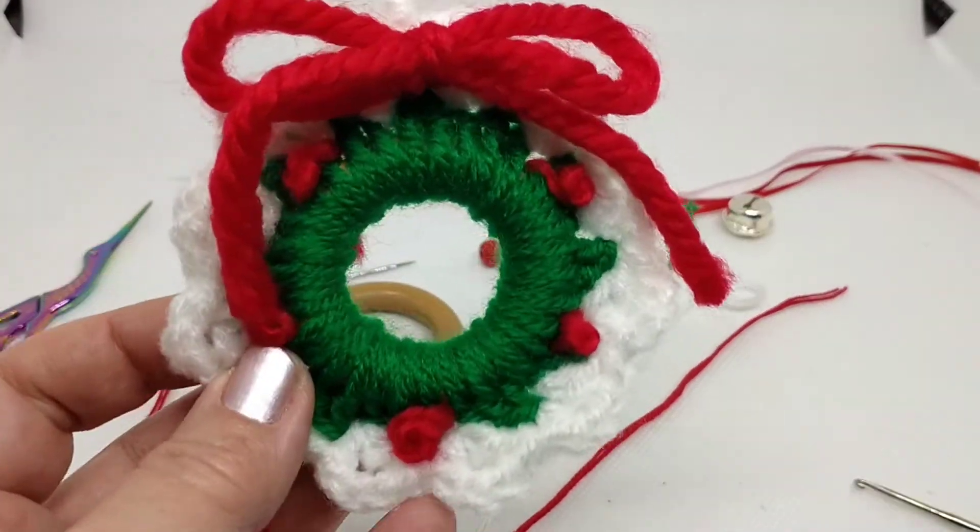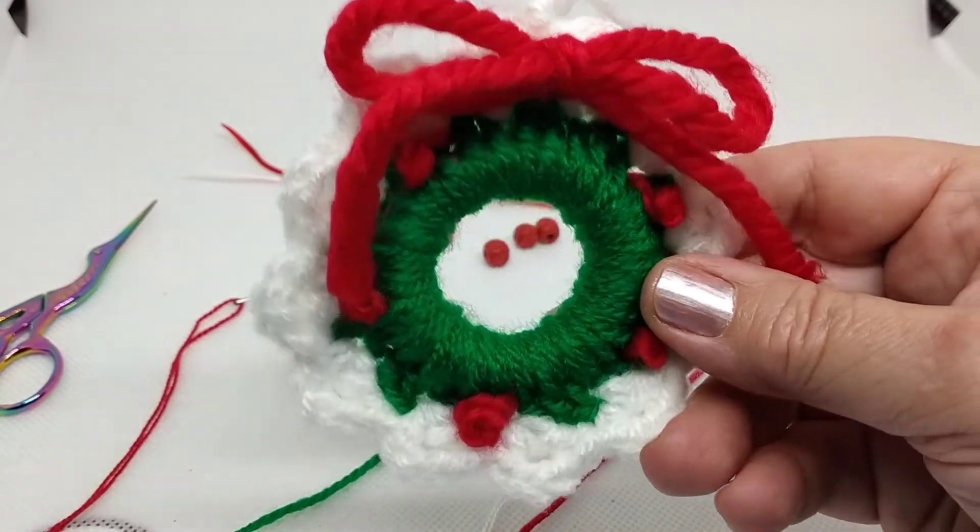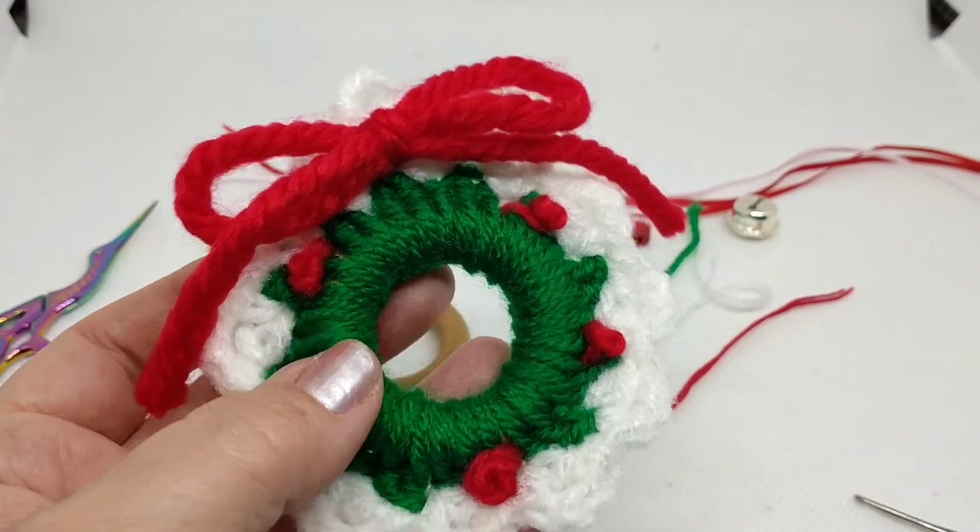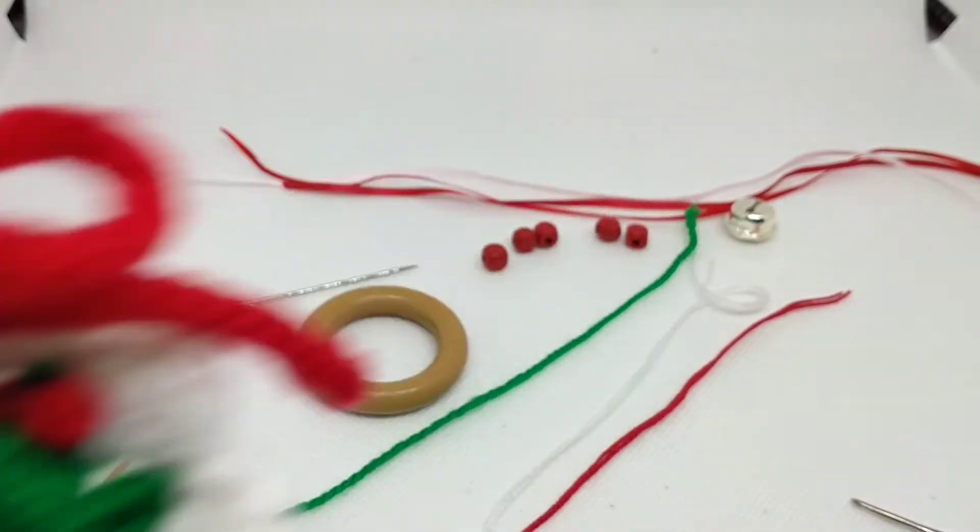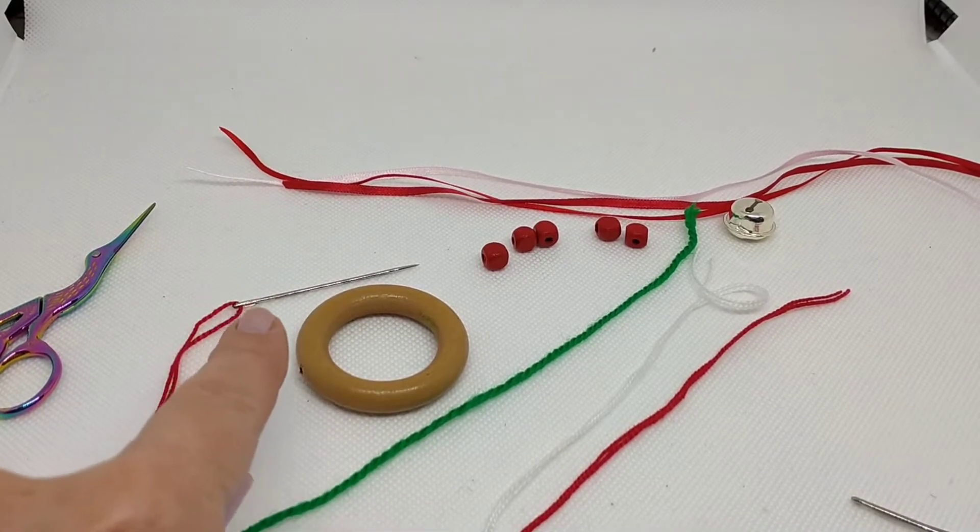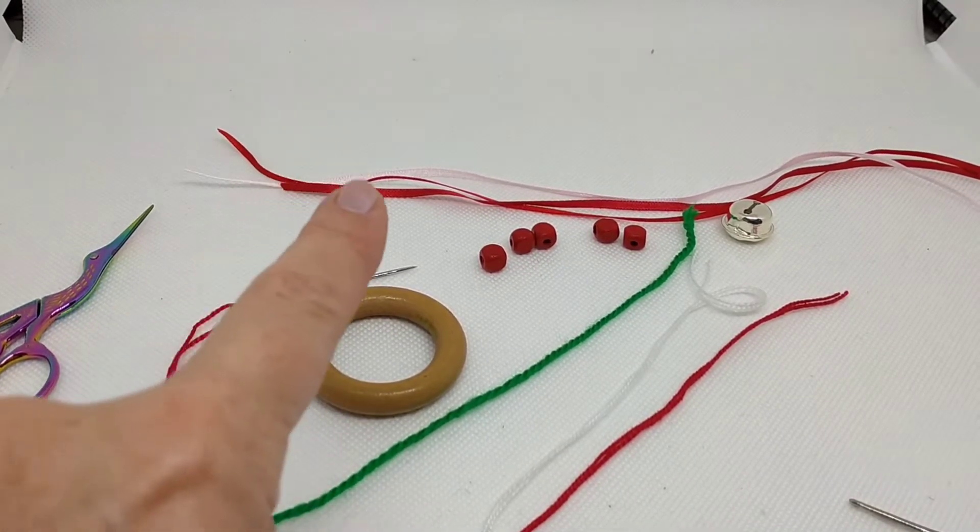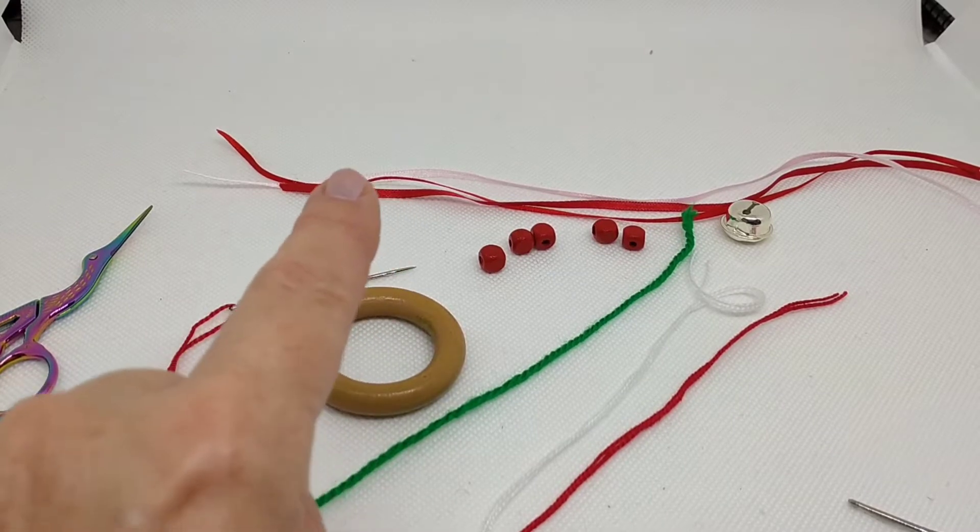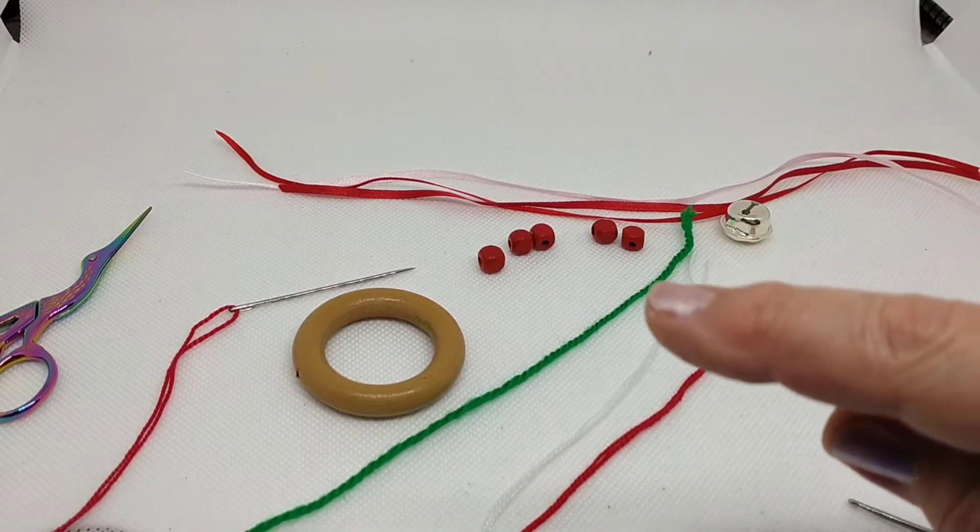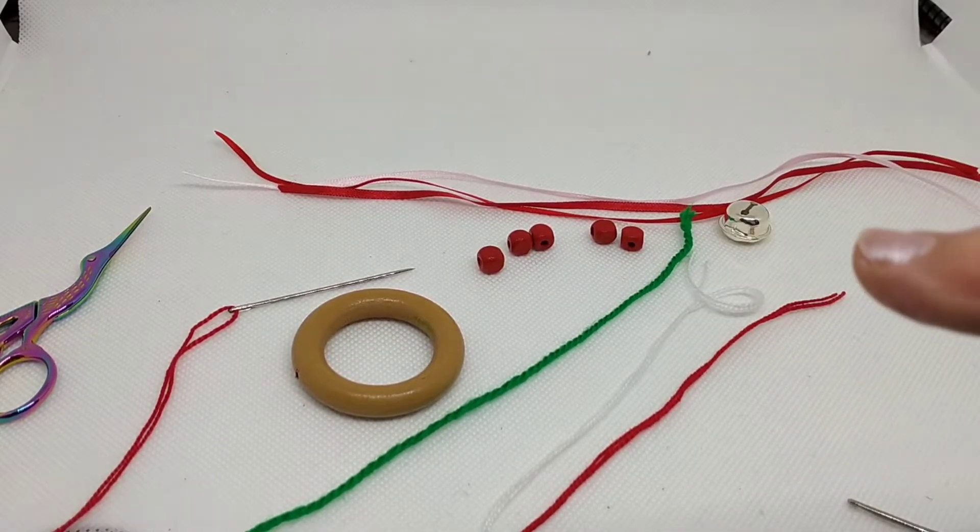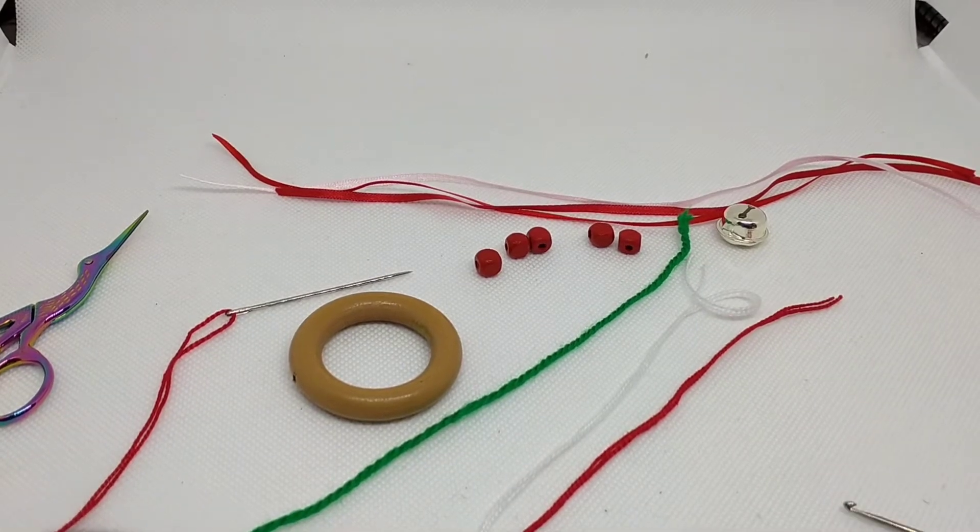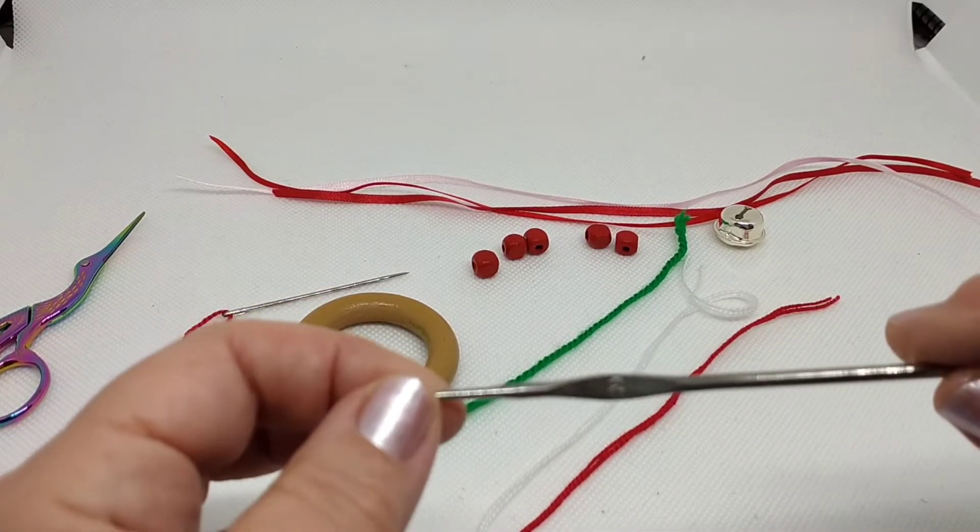Para hacer esta corona, que no va a ser exactamente igual, le vamos a dar un toque personal, pero nos vamos a guiar por ella. Y para eso voy a usar una anilla de madera, una aguja lanera, tijeras, lazos de color blanco y rojo, cinco cuentas rojas, un cascabel.